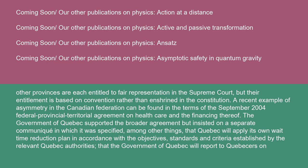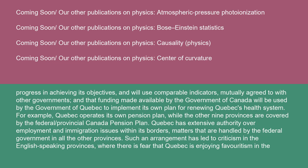The government of Quebec supported the broader agreement, but insisted on a separate communiqué in which it was specified, among other things, that Quebec will apply its own wait-time reduction plan in accordance with the objectives, standards, and criteria established by the relevant Quebec authorities; that the government of Quebec will report to Quebecers on progress in achieving its objectives and will use comparable indicators mutually agreed to with other governments; and that funding made available by the government of Canada will be used by the government of Quebec to implement its own plan for renewing Quebec's health system.